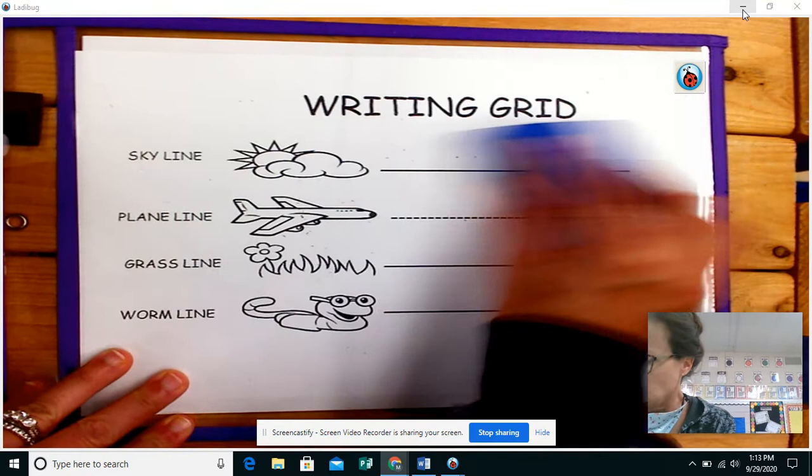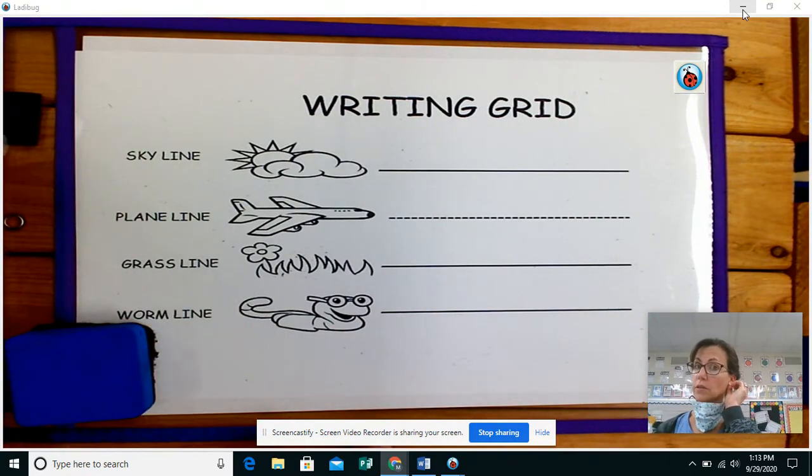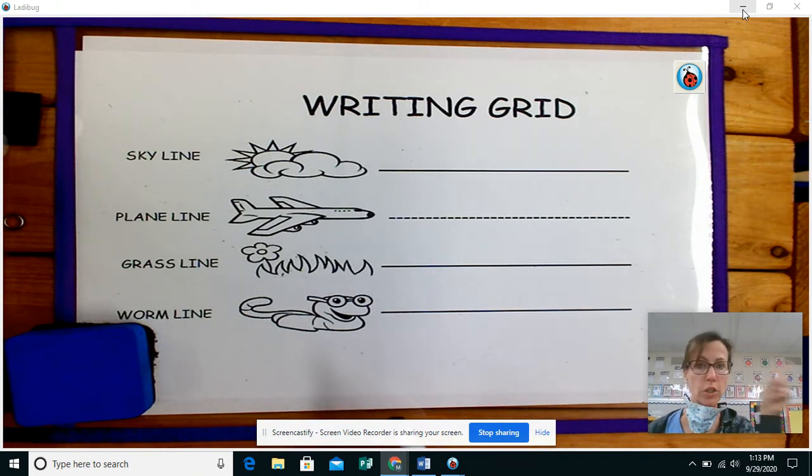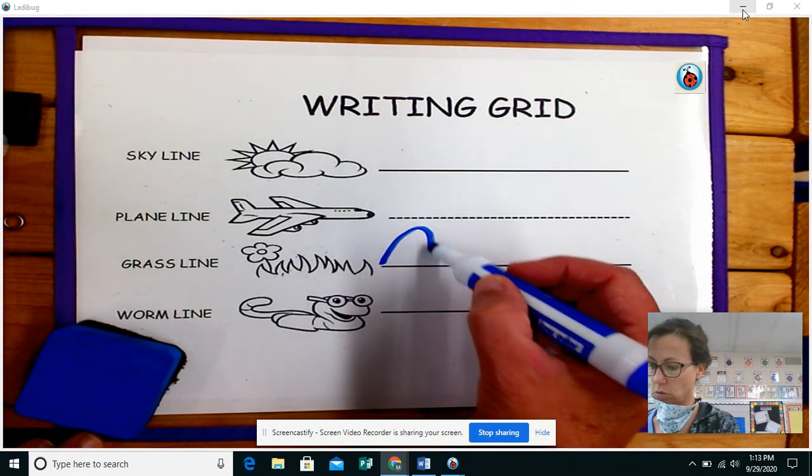So I'm erasing this. This is important. And this honestly is one of the hardest letters that students have with writing. Okay. I'm going to show you what not to do. This is the no, no. Do not start at the grass line. Do not.